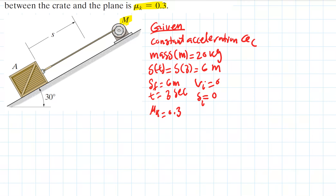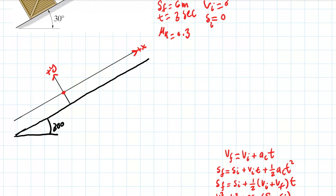We will draw the free body diagram. We have our incline at 30 degrees, with the horizontal x-axis parallel to the plane and the y-axis perpendicular to the plane. We represent the crate as a red dot — the center of gravity of the crate — treated as a particle.